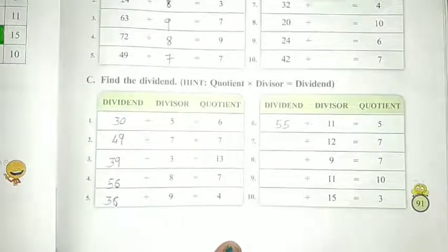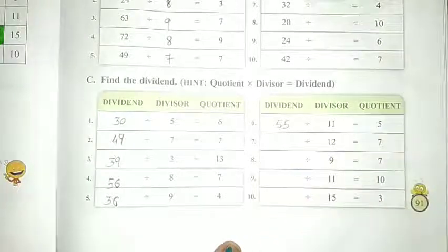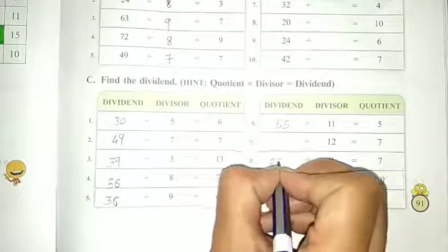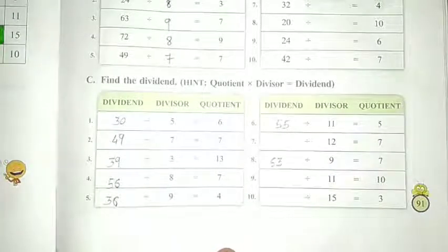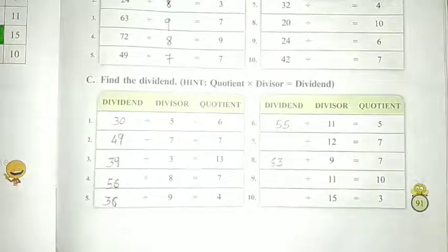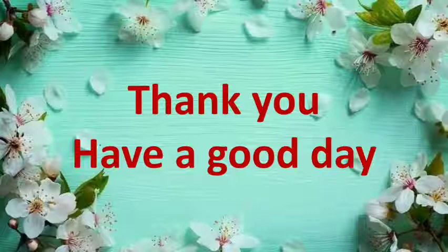ऐसे आपको complete करना है. 9 7s are 63. These 3 all are for your homework. I hope all these things are clear to you. Thank you. Bye. Have a good day.